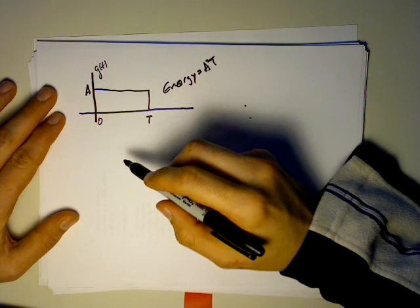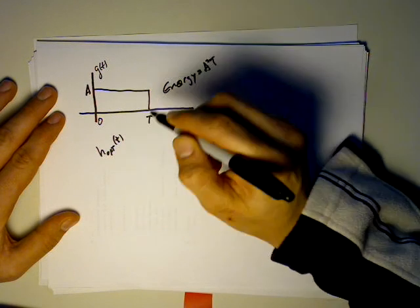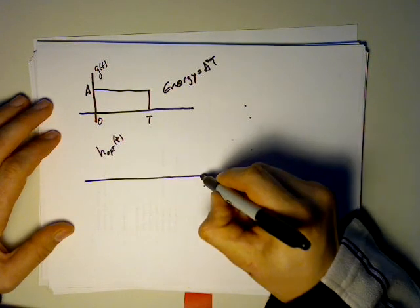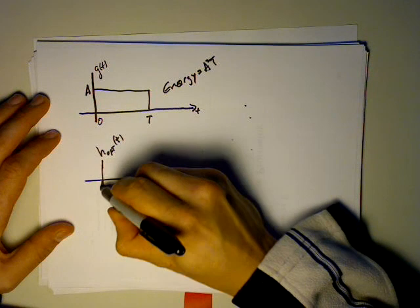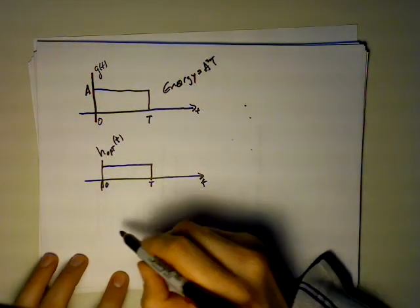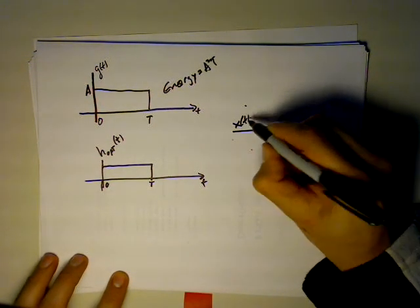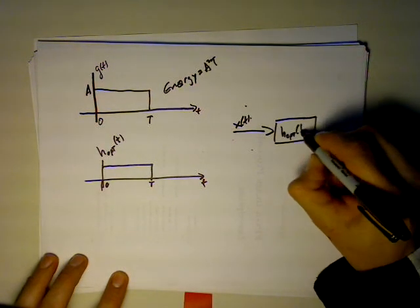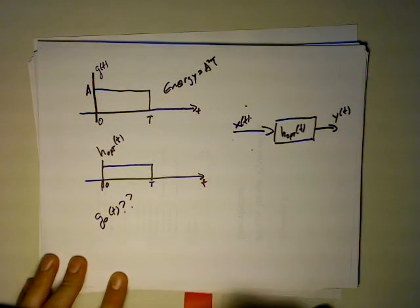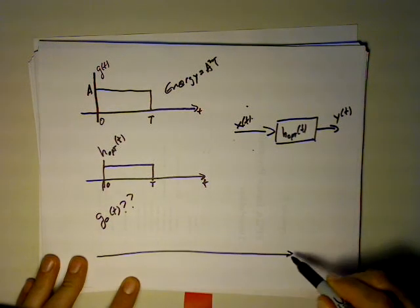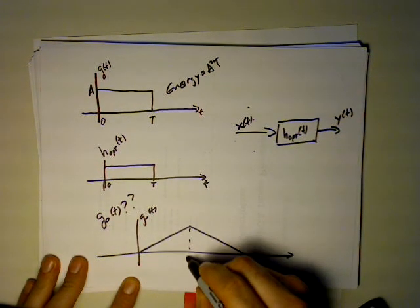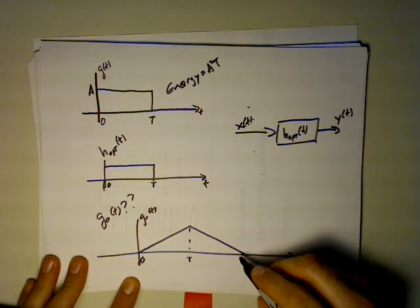What would be our h_optimal for this? We would flip it around the y-axis and shift it by T. h_optimal will look almost like the exact same thing. When we filter, when we receive our signal x and feed it into h_optimal(t) and produce the output y(t), what does g₀(t) look like? g₀(t) is going to look like a triangular pulse. Why is that? Because what happens when you convolve two rectangular waves together? You get a triangular pulse that's twice the width.